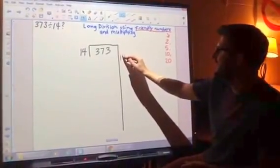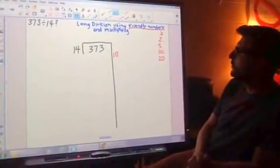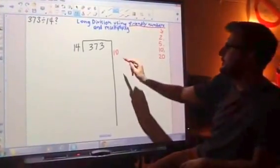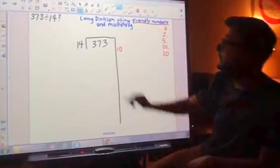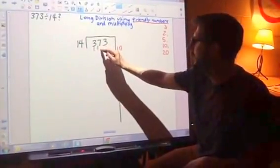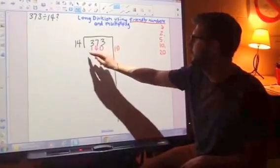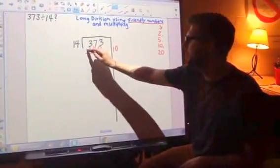So our friendly number, we know it fits at least 10 times, so we're going to try with 10, and the first thing you're going to do is just multiply 10 times 14. 10 times 14, the students know to add that 0 to get 140. And from there, we're going to subtract.